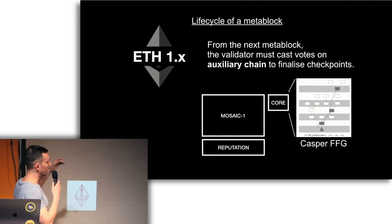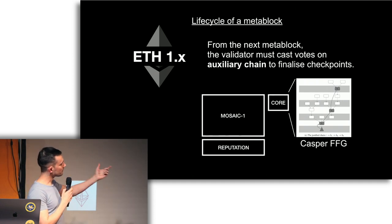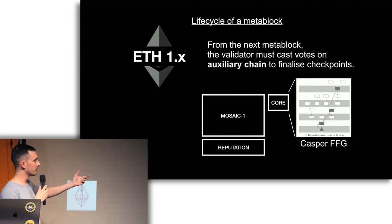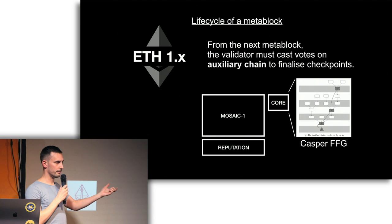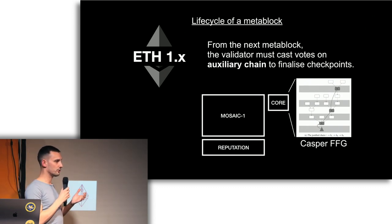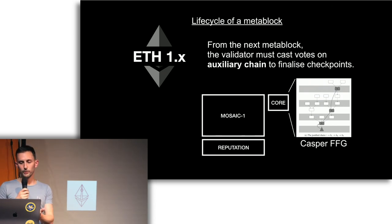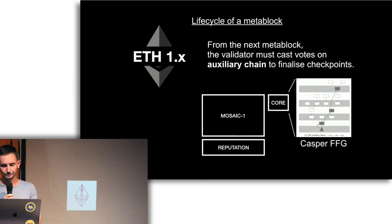As soon as you join on Ethereum as a validator, there's a concept of meta block opening. The validator then needs to join on this auxiliary system, and on this auxiliary system he needs to play Casper FFG. We want to do that because we don't want to expend new proof of work. We just want to have a way to finalize chain history based on any block proposer mechanism. In more detail, you actually play this twice — once to observe the state of Ethereum 1x and agree on that, and once to finalize your own chain — so that information can also be transferred from Ethereum 1x onto the auxiliary system.